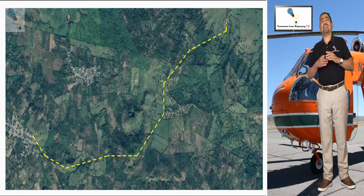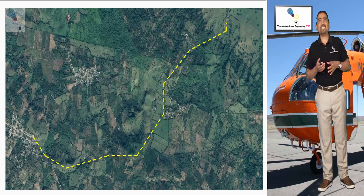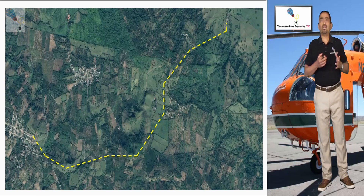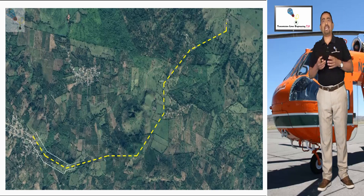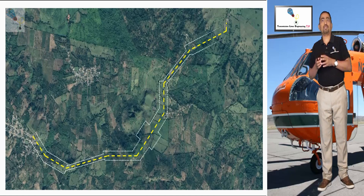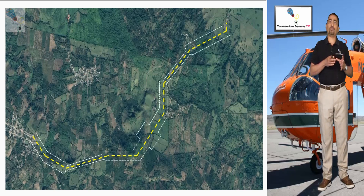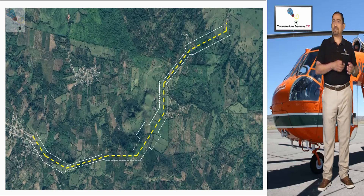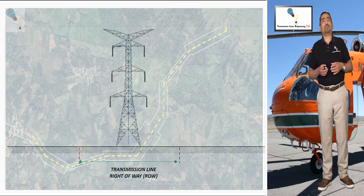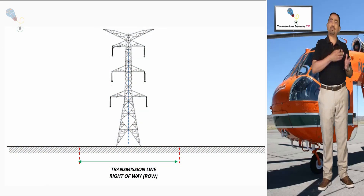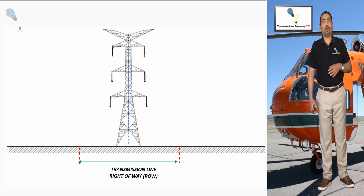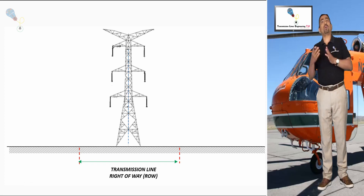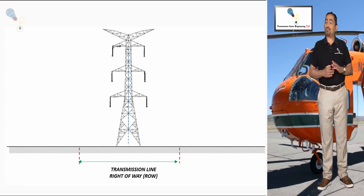We will start by identifying the starting data for its calculation. As number one, we have the identification of those sections of the line which have restrictions on the right-of-way due to limitations to the permits, as seen in the previous video. As number two, we have the geometry of the suspension structures. Why suspension ones? Simple — they are the ones that will be most used in any transmission line project.